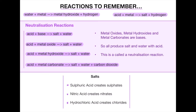The other four reactions to remember are neutralization reactions, which occur when an acid reacts with a high-pH substance. Acid plus base makes salt and water. Acid plus metal oxide makes salt and water. Acid plus metal hydroxide makes salt and water. Acid plus metal carbonate makes salt, water and carbon dioxide. It's important to remember that metal oxide, metal hydroxide and metal carbonates are all bases, which is why these are classed as neutralization reactions.